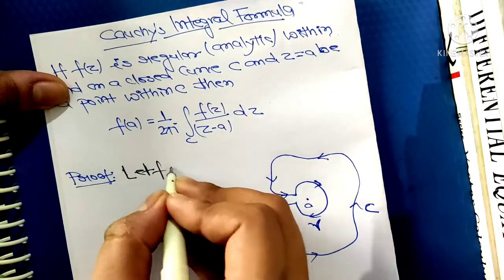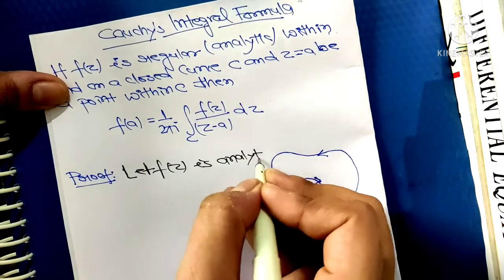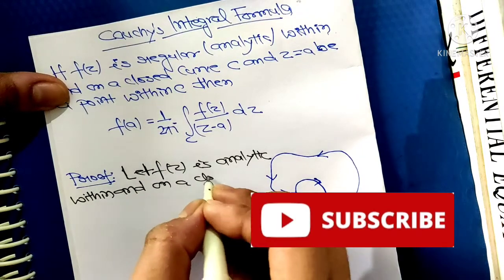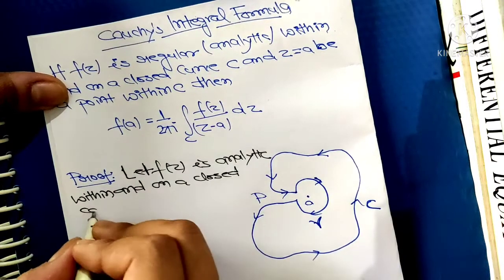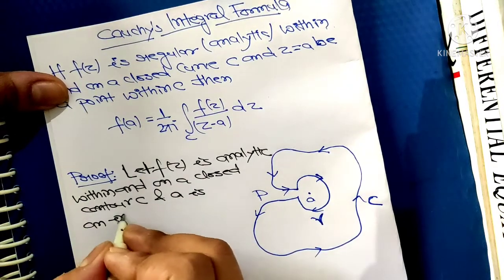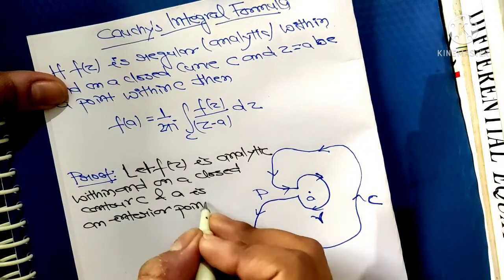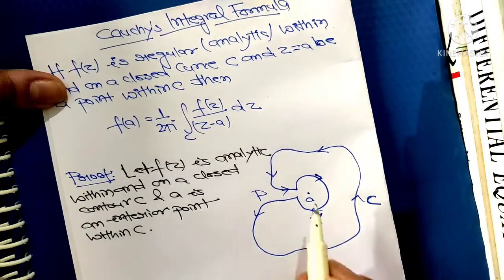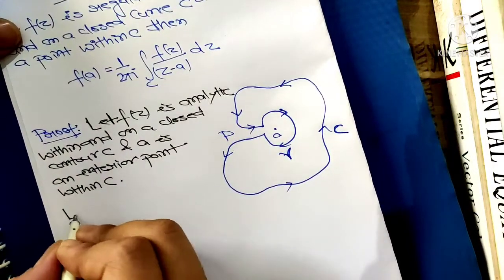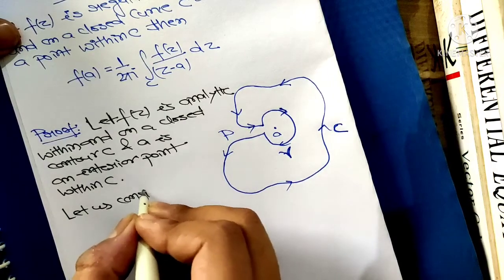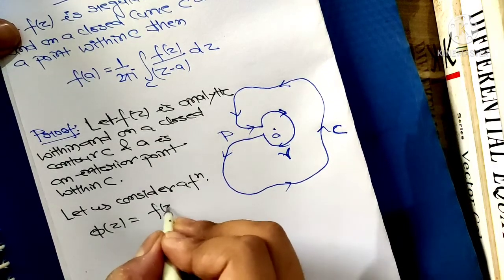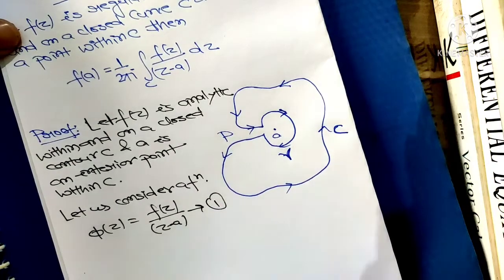Let f(z) be analytic within and on a closed curve or contour C, and let a be any interior point within C. As you see, a is an interior point under the closed contour C. Now let us consider a function φ(z) equals f(z) upon z minus a — call this equation 1.